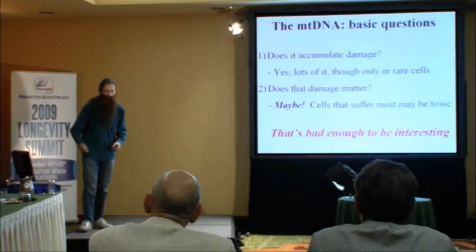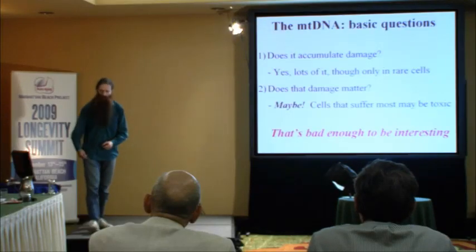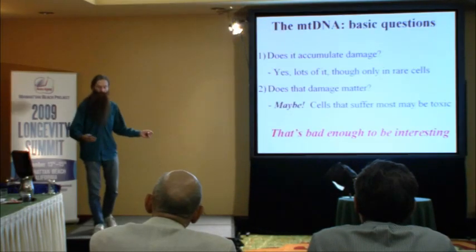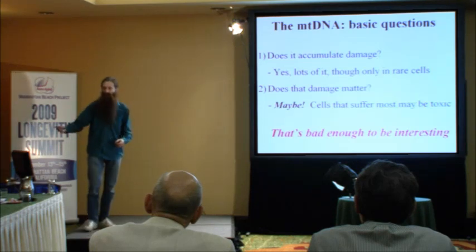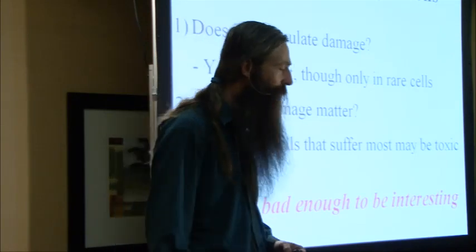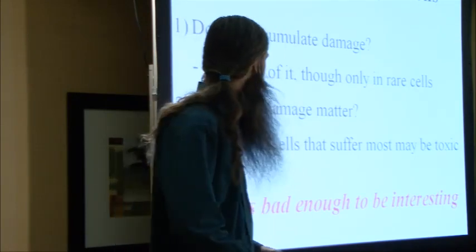Here are some interesting questions. We know that the DNA in our chromosomes in the nucleus accumulates damage and mutations. It also accumulates telomere shortening. Telomere shortening doesn't happen in the mitochondrial DNA because it's circular and so it doesn't have any ends. But mutations certainly do happen in the mitochondrial DNA.